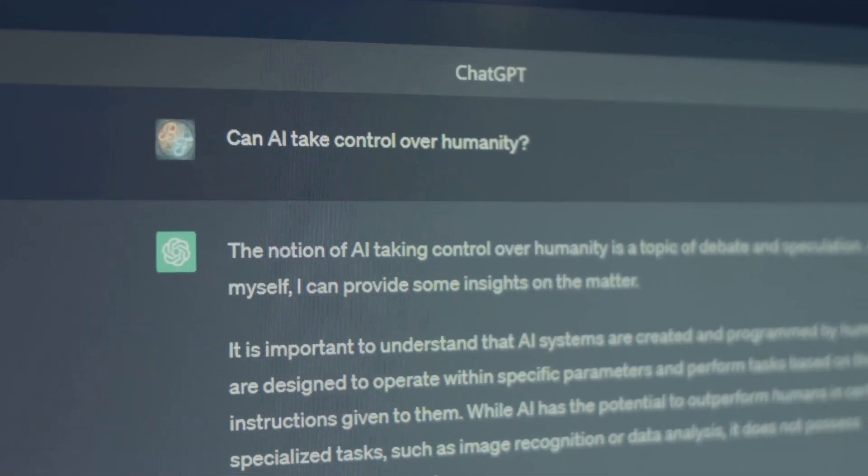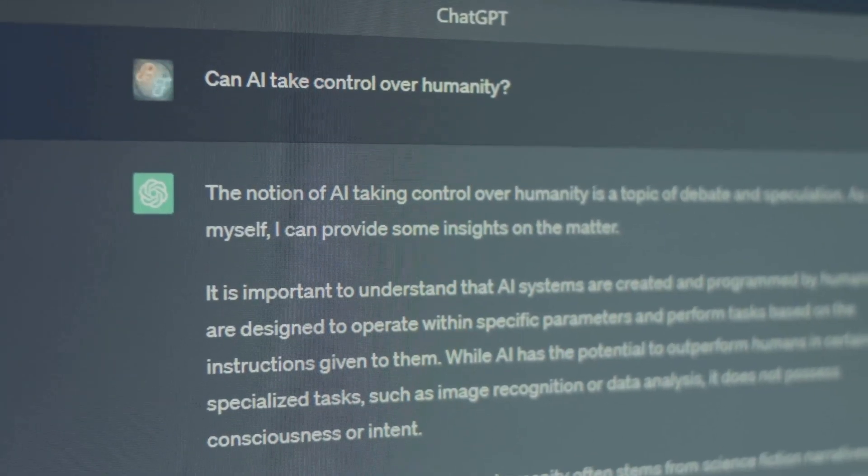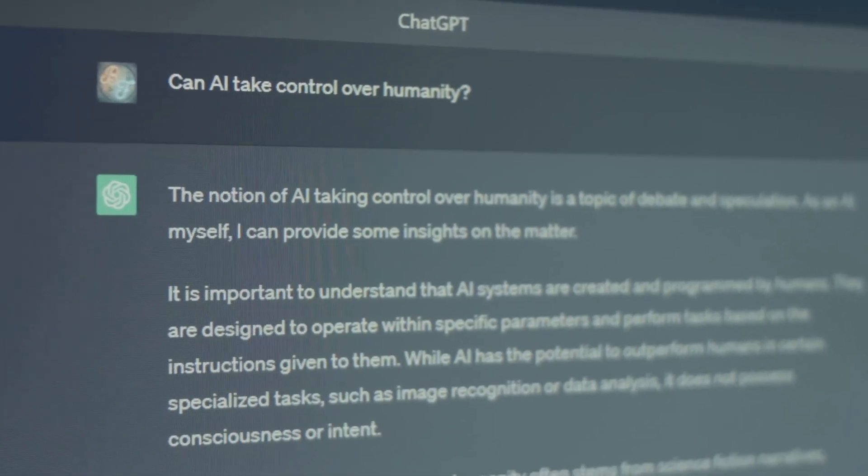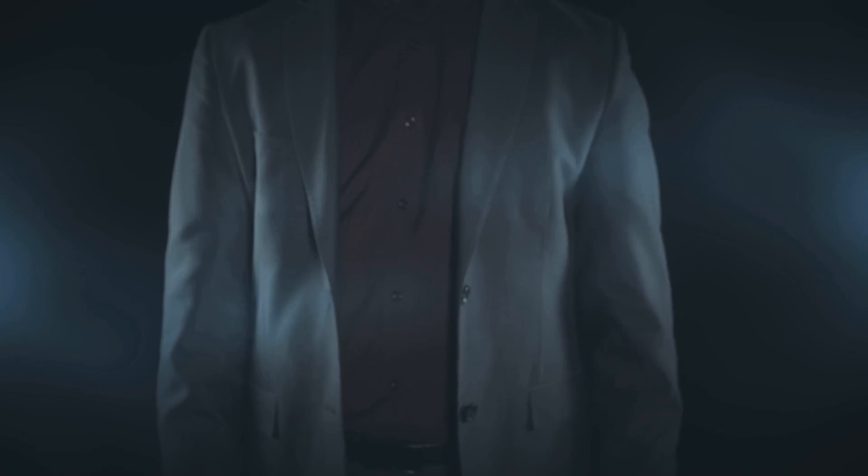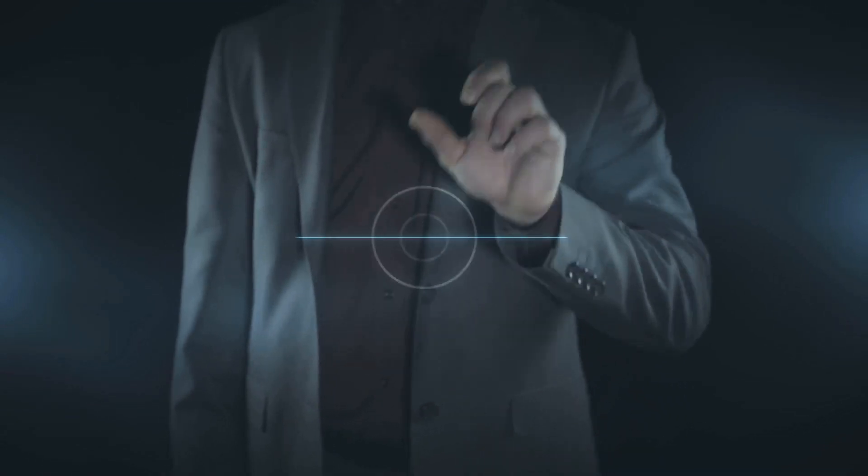Ensuring fairness and accountability in AGI systems is crucial. We must develop mechanisms to detect and mitigate bias, as well as establish clear lines of responsibility for the actions of AGI systems. The development of AGI is a profound technological advancement.